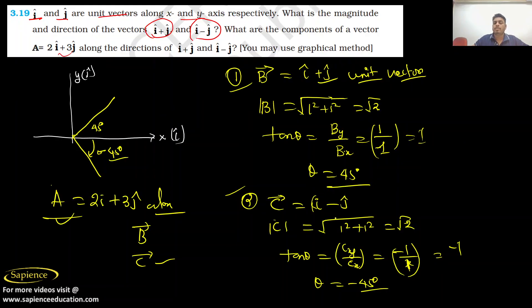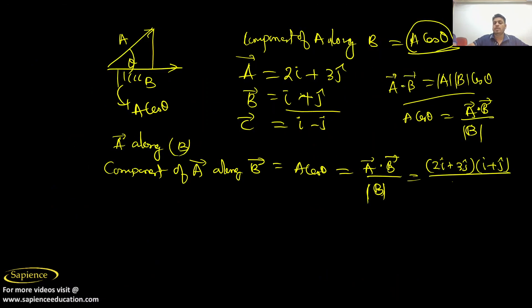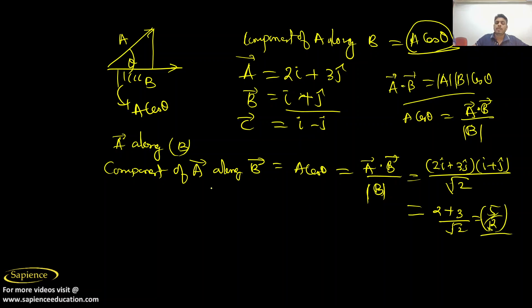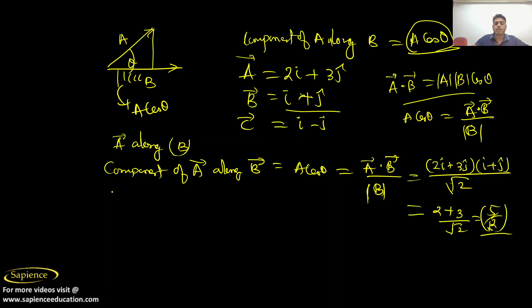The magnitude of B is root 2, as we found earlier. Calculating the dot product: 2 times 1 plus 3 times 1 equals 5. So the component of A along B equals 5 divided by root 2. This is the component of A along the direction i plus j.